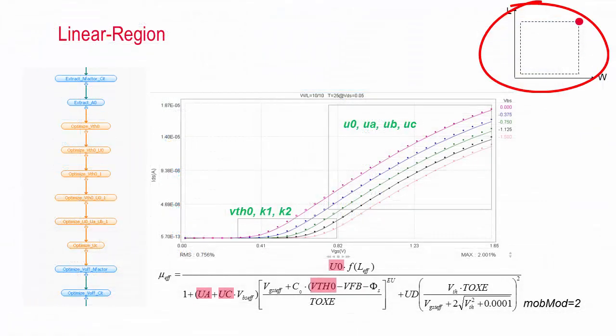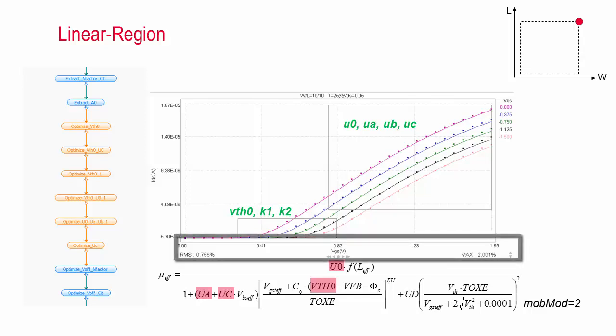We begin with the largest device we have, with maximum gate width and length, and look at the linear region. By sweeping VGS, we observe the dependence of IDS to different VBS. In the region right as the device is turning on, we may extract VTH0, K1, and K2. On the other hand, in the linear region of IDS, we may get mu0, muA, muB, and muC. From the equation below, you can see how some of these parameters are involved when calculating the effective mobility.